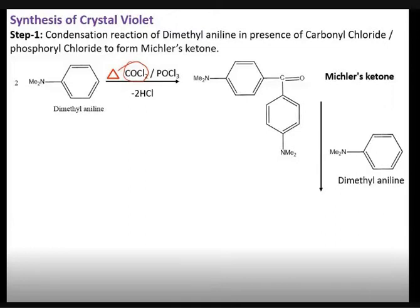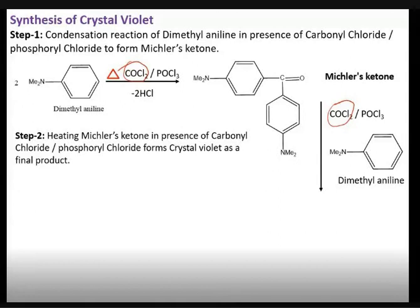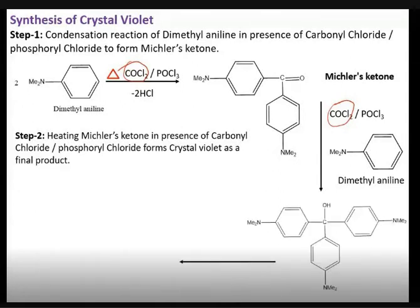Then there is another addition of one mole of dimethylaniline in the presence of phosgene or carbonyl chloride, and in the presence of heat. This gives the product that is Michler's ketone — that is our crystal violet precursor — but there is still one molecule of OH present, so it will take part in the reaction.